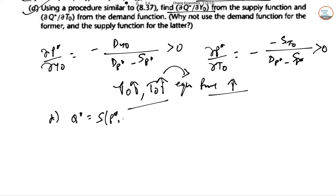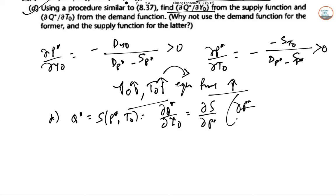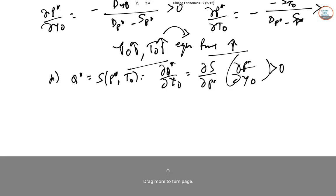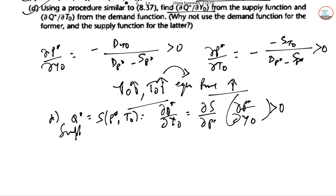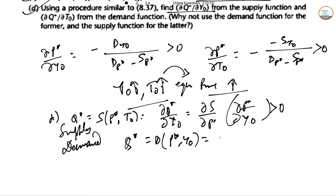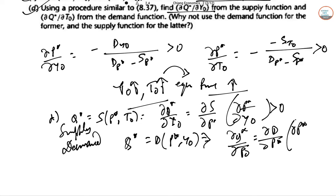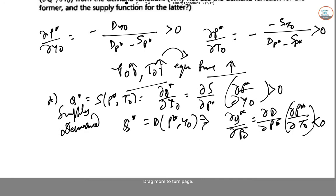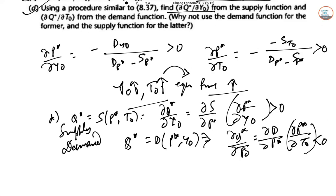Using Q* = S(P*, T₀), we get dQ*/dY₀ = S_{P*} · (∂P*/∂Y₀), which is greater than zero. Using the demand function, dQ*/dT₀ = D_{P*} · (∂P*/∂T₀), which is less than zero. Using the supply function directly here is simpler than using the demand function.